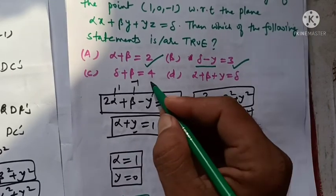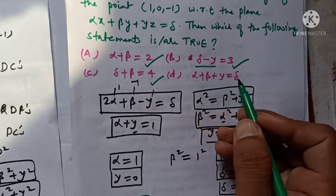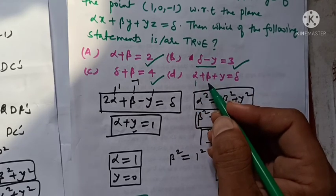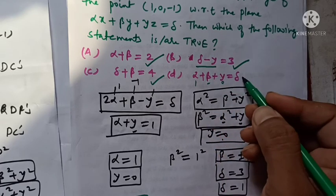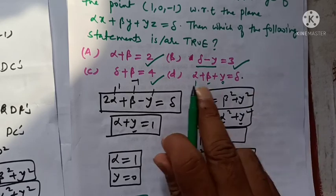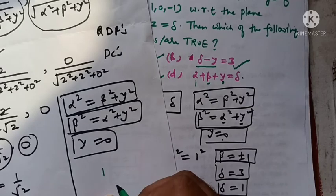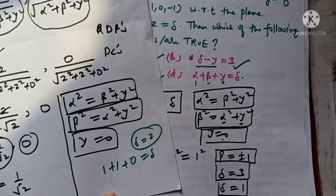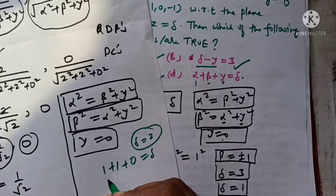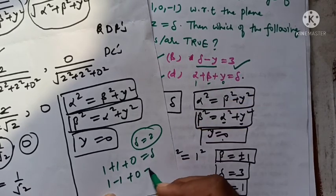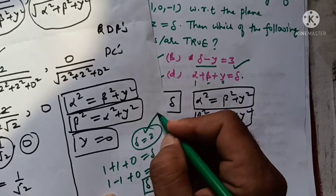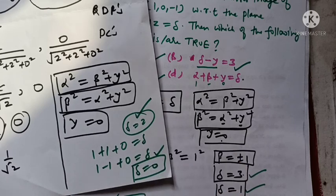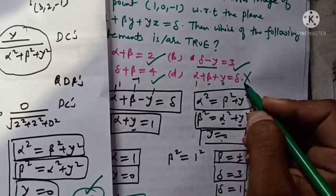Evaluating option (D): alpha + beta + gamma = delta. With alpha=1, beta=+1, gamma=0: left side = 1+1+0 = 2, but delta = 3 — not satisfied. With alpha=1, beta=-1, gamma=0: left side = 0, but delta = 1 — not satisfied. Delta's actual values were 3 and 1, but these calculations give 2 and 0, which don't match. So option (D) is FALSE.